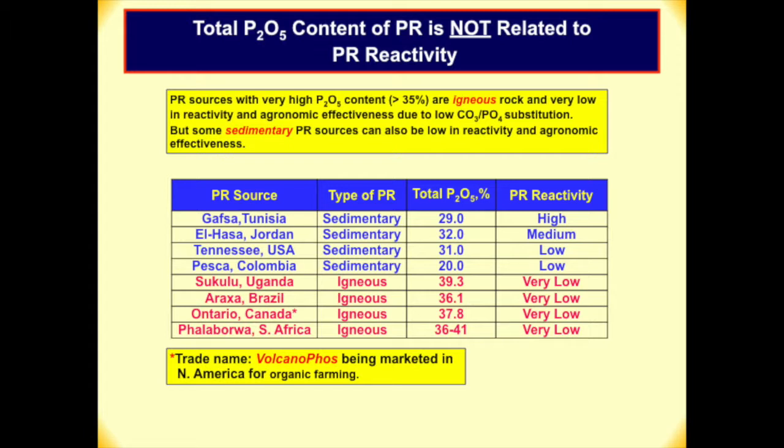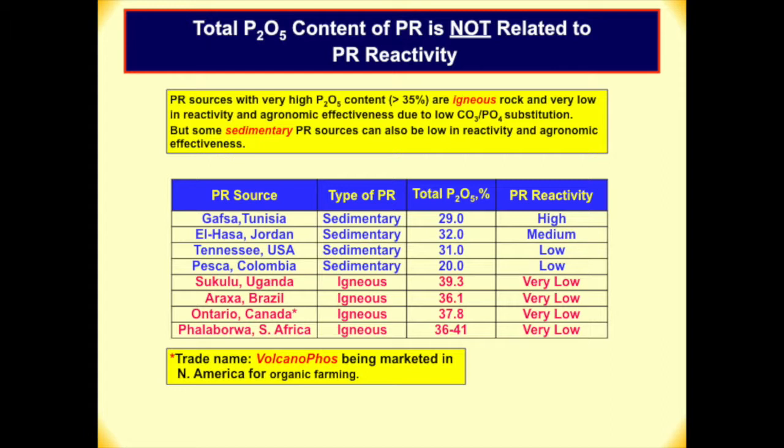To give you an example, this rock from Canada, Ontario — it's the igneous rock, almost 38% total P2O5. They are big in the North American market for organic farming. Phosphate rock is considered organic fertilizer because it's natural. The traders even say 'volcano ash.' Farmers say wow, 38% must be good — the higher the P2O5. But this is basically like cement, a really hard rock. Unfortunately, farmers are not aware of that.